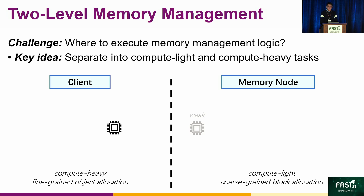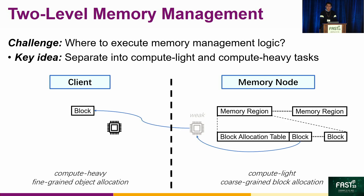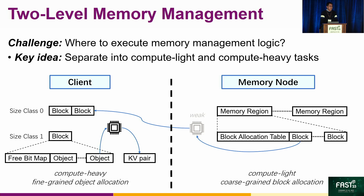Fusee adopts a two-level memory management scheme to efficiently allocate remote memory on DM. The key idea is to separate memory management logic into compute-light and compute-heavy tasks. Fusee uses the weak compute power on memory nodes to execute the compute-light coarse-grained memory block allocation, and lets clients handle the fine-grained KV pair allocation. Specifically, the memory space is partitioned into two-gigabyte memory regions, further partitioned into 16-megabyte memory blocks. When an allocation request comes, the memory node selects a free block and returns the block address to the client. On the client side, a slab allocator manages the allocated memory blocks, partitioning them into small fixed-sized objects, with each KV pair allocated from the smallest size class that fits.